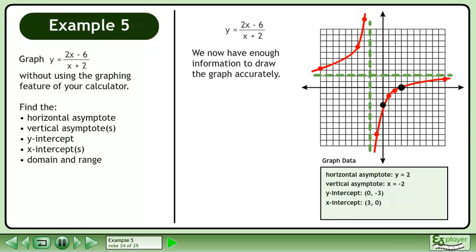We now have enough information to draw the graph accurately. Finally, we will state the domain and range. The domain is x belongs to the set of real numbers with the restriction that x cannot equal negative 2. The range is y belongs to the set of real numbers with the restriction that y cannot equal 2.